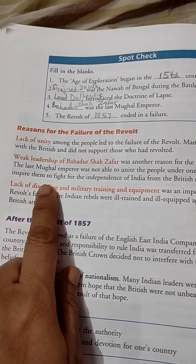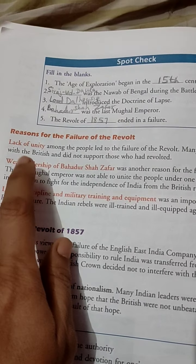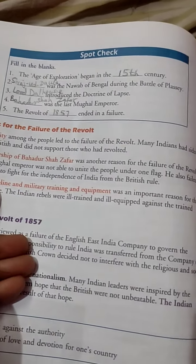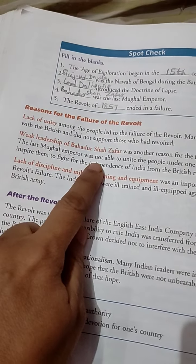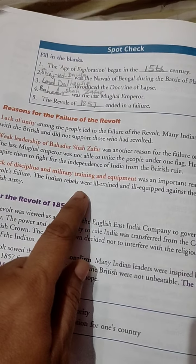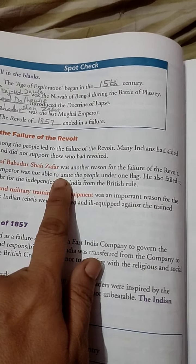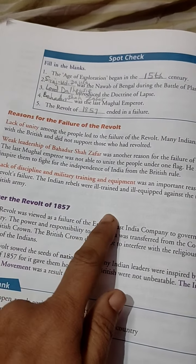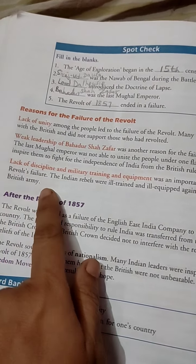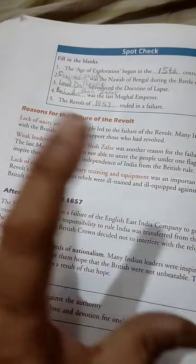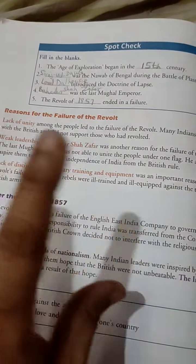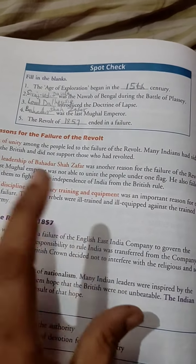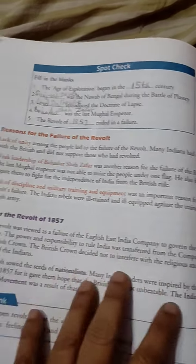Reasons for the failure of the revolt: lack of unity among the people was a key reason, as many Indians had sided with the British. There was also weak leadership from Bahadur Shah Zafar, who was unable to unite the people under one flag. Additionally, there was a lack of discipline, military training, and equipment — the Indian rebels were ill-trained and ill-equipped, and did not have well-equipped weapons or funds like the British.